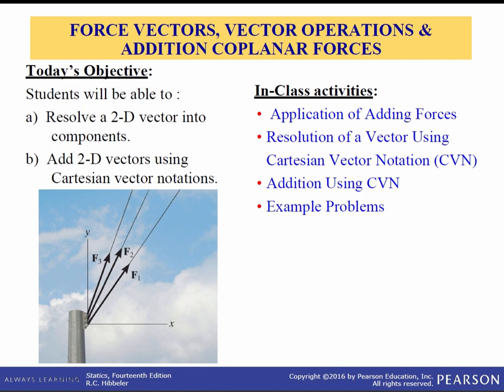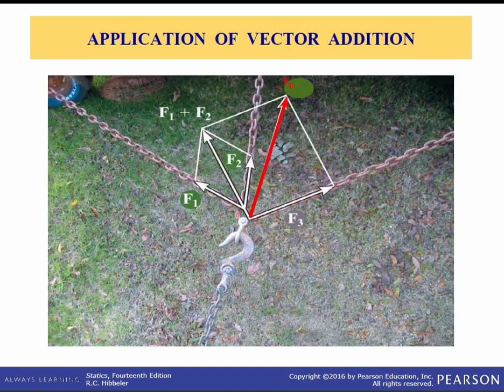First we'll go over some applications of adding forces. We'll resolve a vector using Cartesian vector notation, and we'll talk about using that notation to do addition, and then we'll do some sample problems. Now there are three concurrent forces acting on this hook: F3, F2, and F1, directed along the lines of action of these chains.